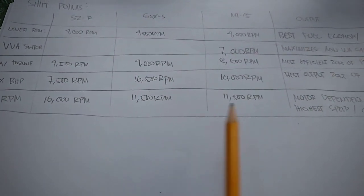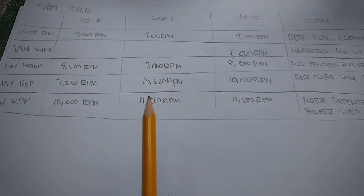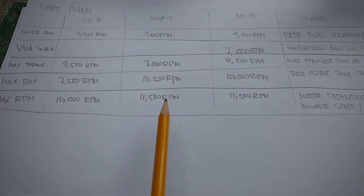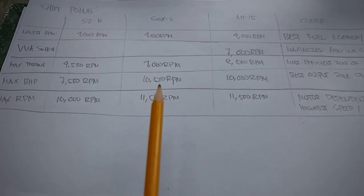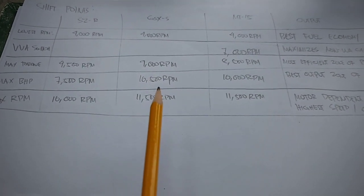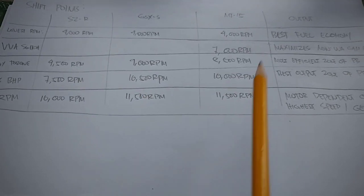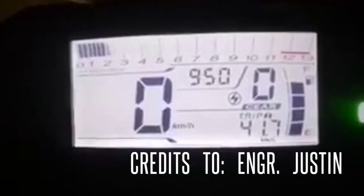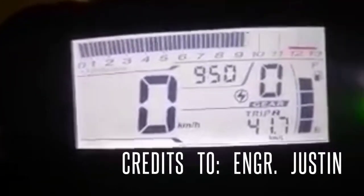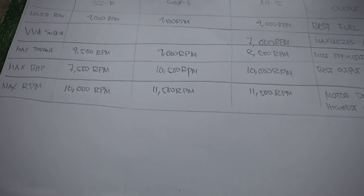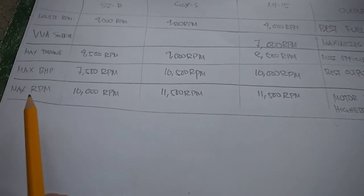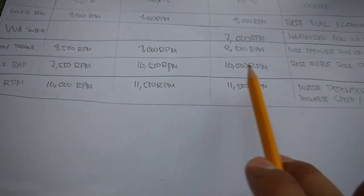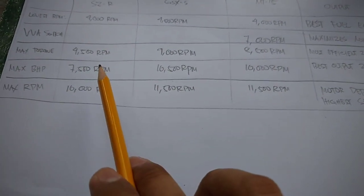So in comparison, si MT-15 at si GSX, nag-redline din sila at 11.5K, although si GSX pwede siya mag-rev hanggang 13,000 RPM kumpara kay MT-15 na tumatalbog sa 11.5K. So technically, bakit nga ba tayo mayroong maximum RPM kung nandito lang yung maximum horsepower natin?